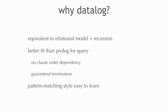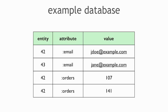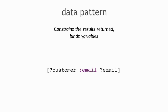We're going to do some queries against an example database that has only four datums in it, ignoring transaction and assert/retract for now — just entity, attribute, value. Queries are built up starting with data patterns. A data pattern is a tuple that both constrains results and binds variables. If there's a constant, that constrains the results — I'm only interested in things where the attribute is email. If there's a variable (starting with a question mark), that's what I want to get back.